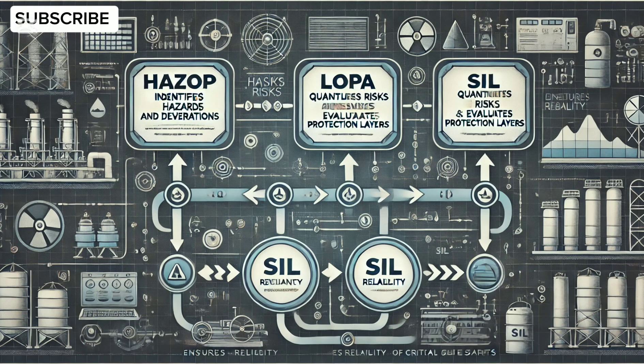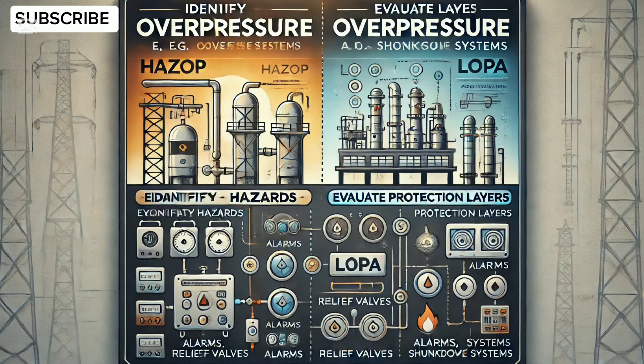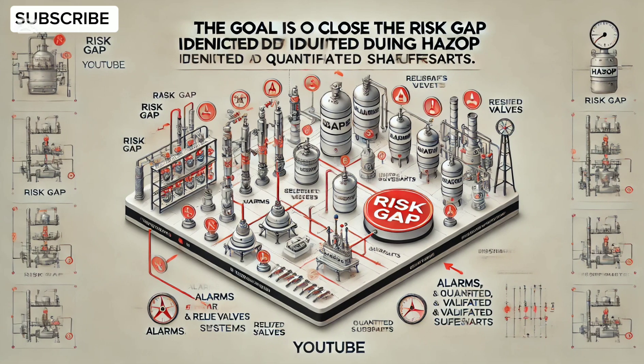HAZOP identifies a hazard — for example, overpressure — while LOPA evaluates layers like alarms, relief valves, and shutdown systems. The goal is to close the risk gap identified during HAZOP using quantified and validated safeguards.